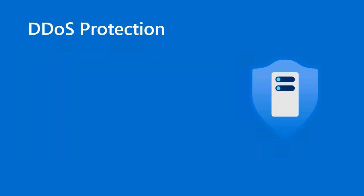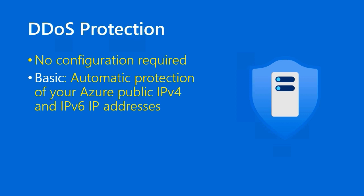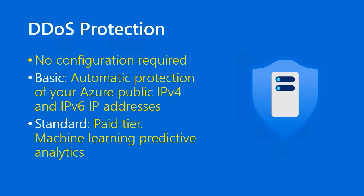So what is Azure DDoS protection? It's one product with two SKUs, neither of which requires any configuration — Microsoft handles it on their side of the cloud responsibility model. The basic tier is free for all Azure customers and provides automatic protection of your public IP addresses, both IPv4 and IPv6, though you get zero telemetry from it. The paid standard tier gives you access to Microsoft's threat analytics, machine learning predictive analytics, and coverage for resources like application gateways, traffic managers, and virtual machines — though you do pay a premium for it.